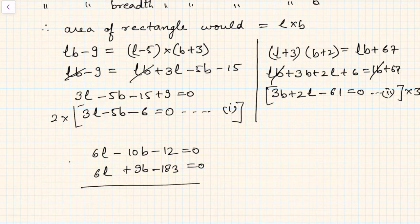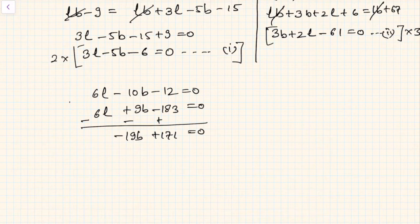And then subtract. This is minus minus plus, so it will become minus 19B plus 171 equals 0. Hence B is 171 upon 19, which gives you B equals 9.